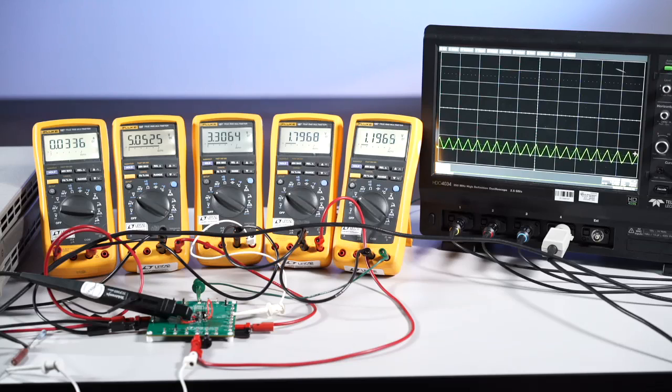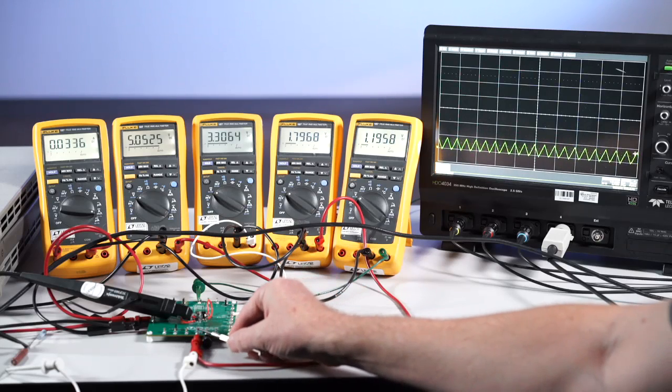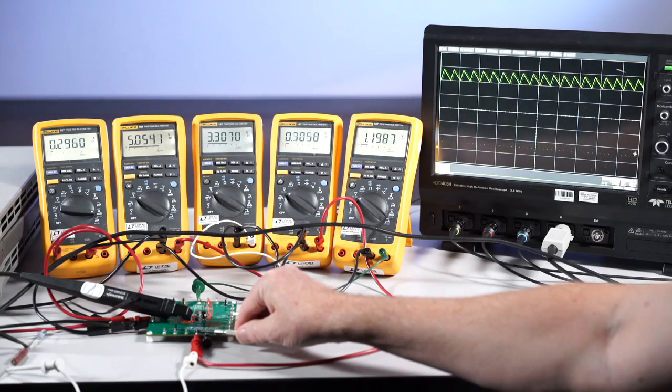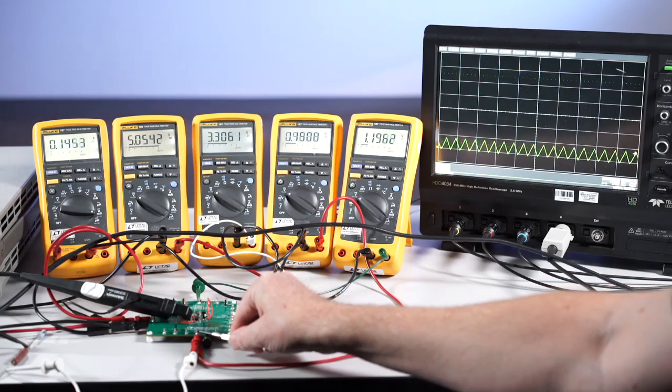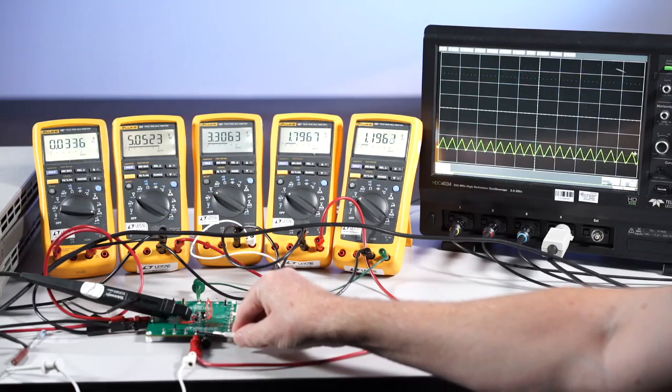The low voltage channels operate similarly. Now I'll short channel 3 output to ground. Once again, the frequency drops and the inductor current is limited. Release the short and the output returns.